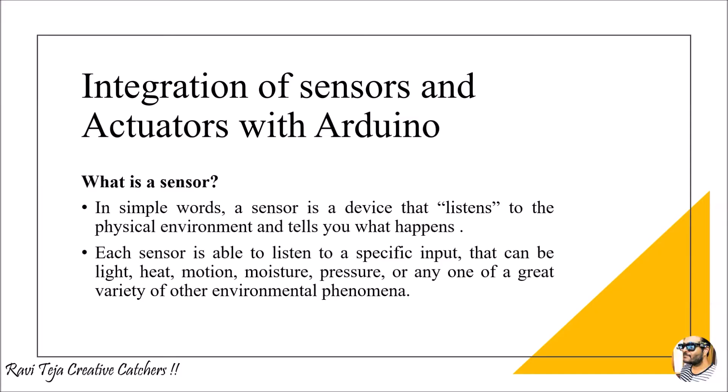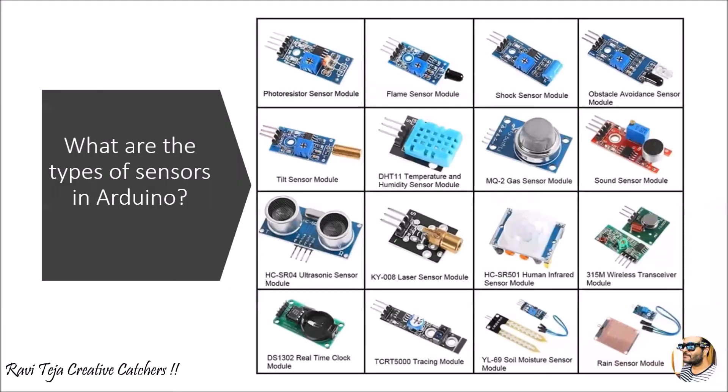Just as humans have several types of sense organs, these sensors work in almost the same way. Using these sensors we take input and give it to the Arduino board, where Arduino processes the input and gives the required output. Each sensor is able to listen to a specific input — it can be light, heat, motion, moisture, pressure, or any kind of environmental phenomenon.